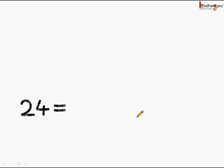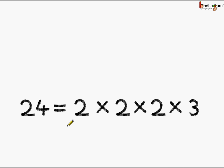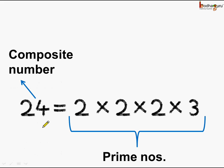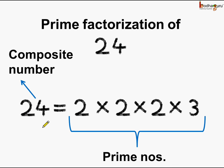So, what did we do? We expressed 24 as 2 multiplied by 2 multiplied by 2 multiplied by 3. Here we see all these factors are prime numbers, and this means we have expressed 24 as a product of prime factors only. Since 24 was a composite number, what we did is called prime factorization.